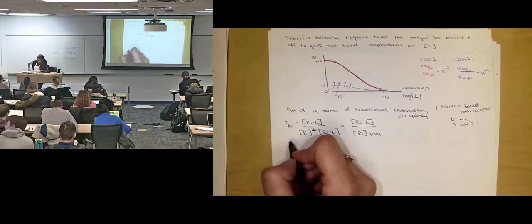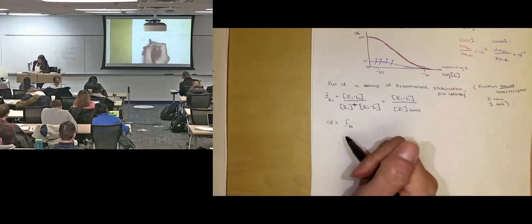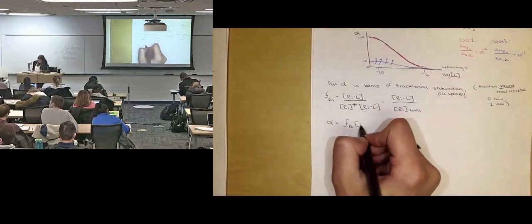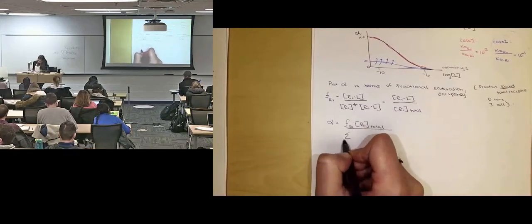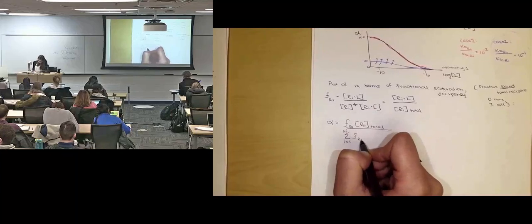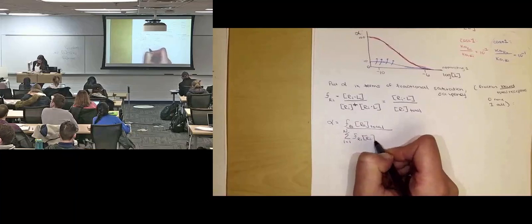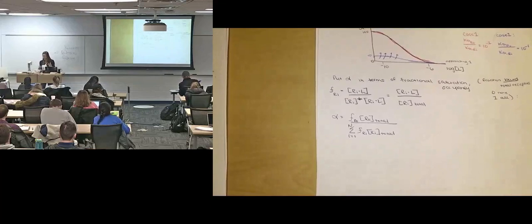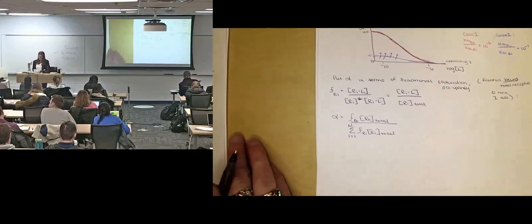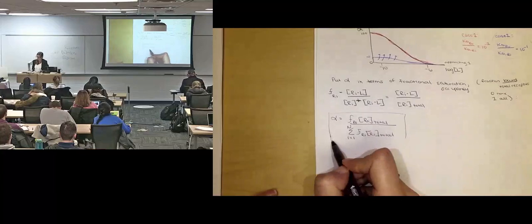And so we get an alpha that is equal to the fraction of our target receptor times the total concentration of our target receptor, divided by the sum over all of our off-targets. What fraction is bound to that? Again this requires that you're able to calculate the complex, you're able to measure the concentration of the complex. But if this information is given to you, this is another useful shortcut if you have been given fractional saturation.